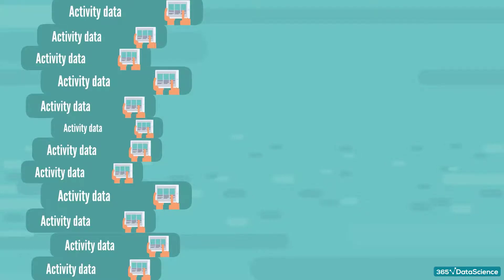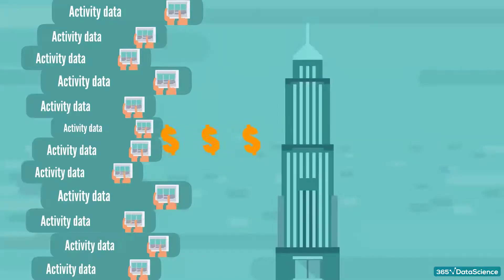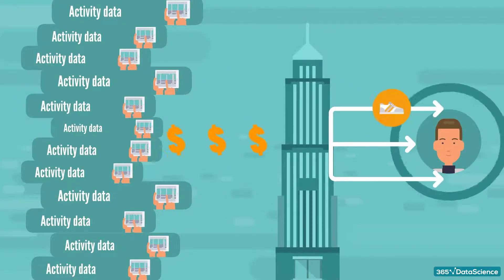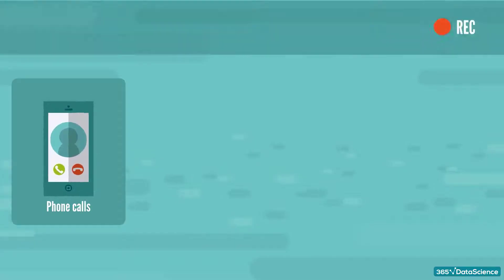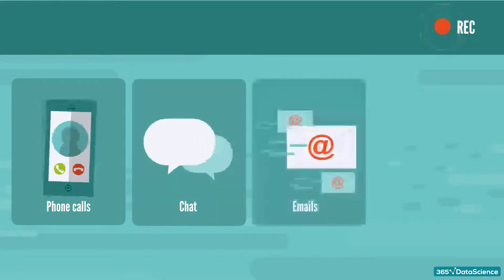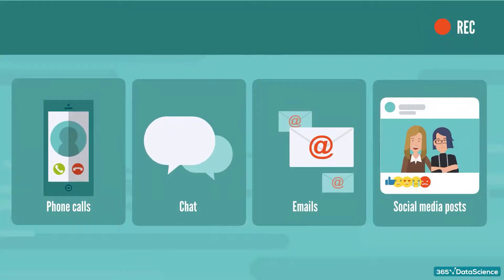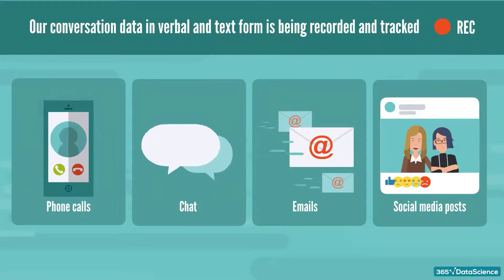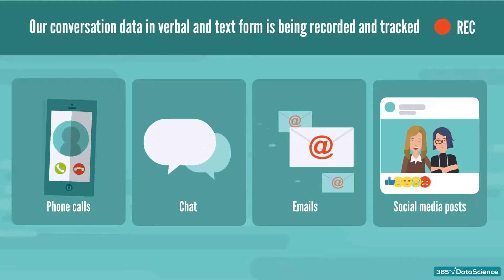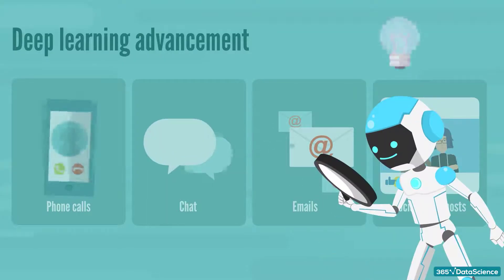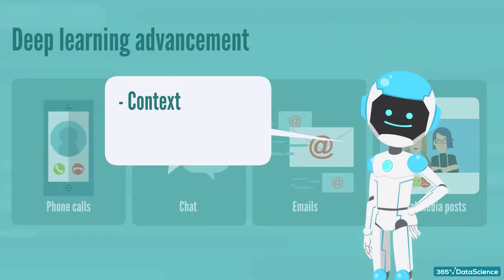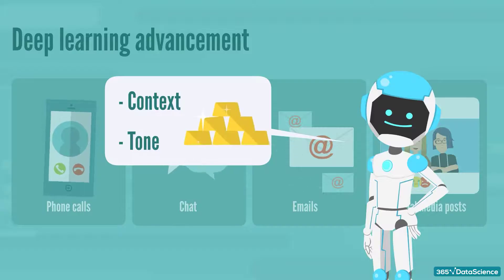In some instances, this can be really valuable to companies. They want to know us better so they can offer us better products tailored to our needs. Many of our phone calls today are recorded. The same is valid for communications we have via chat, emails, or social media posts. There's an abundance of conversation data, be it in verbal or text form. Thanks to the fast advances in deep learning, today we have the tools to analyze this data and extract insights from it. Computer algorithms can provide information in two main directions: context and tone. Such information can be very valuable for organizations.